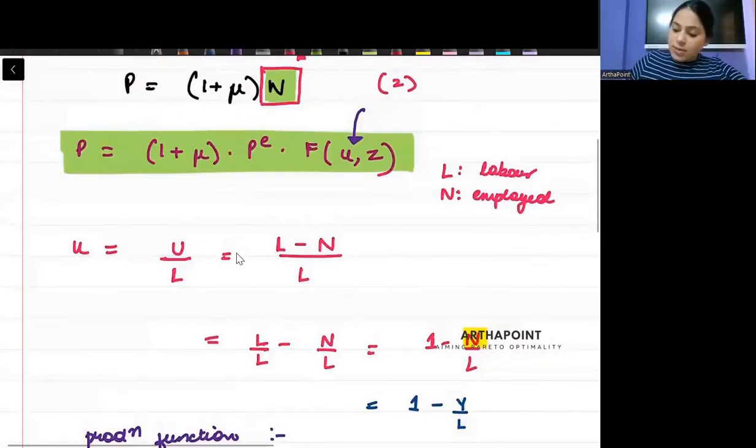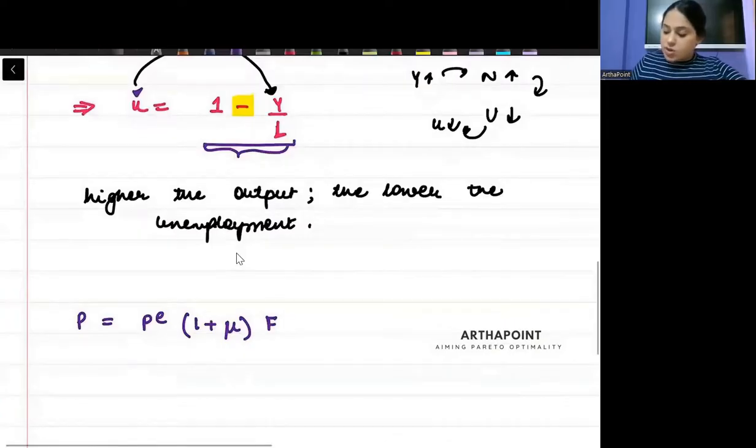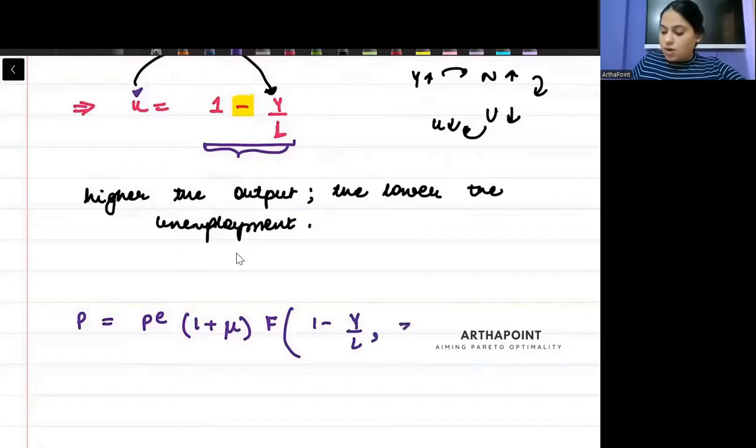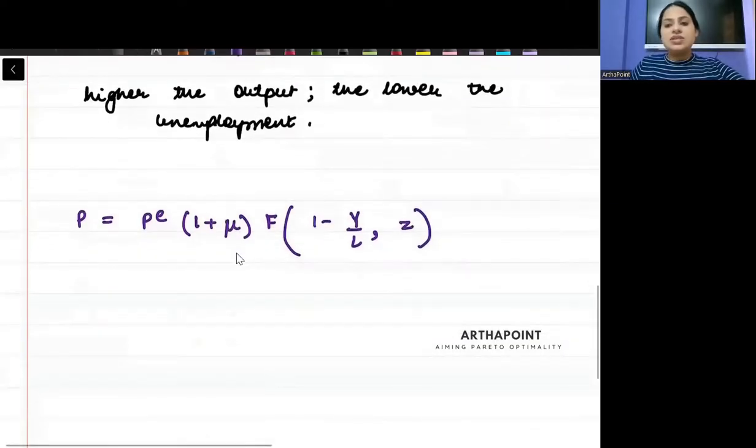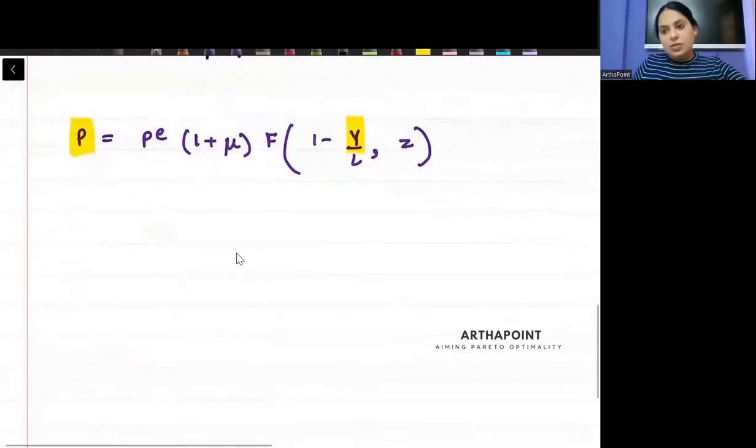And instead of u, I am going to write this entire thing. So I will have 1 minus y by L, comma z. Is this clear? Okay. So now what I have been able to do is derive a relationship between p and y. Clear? Okay.